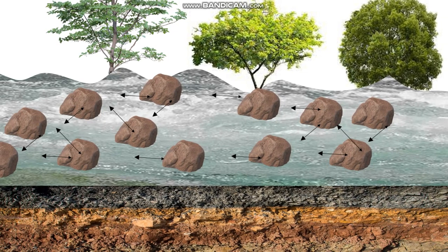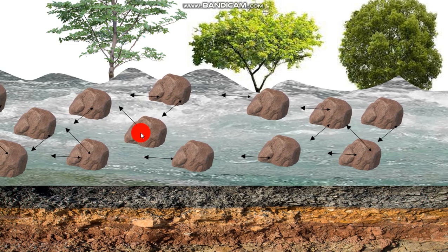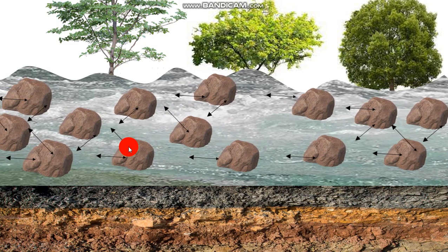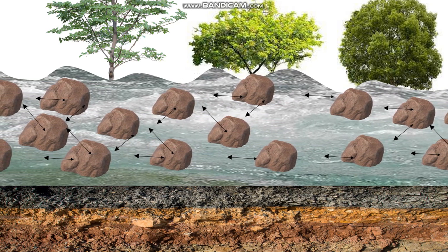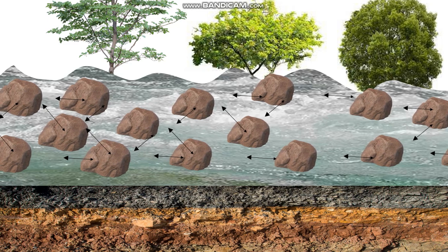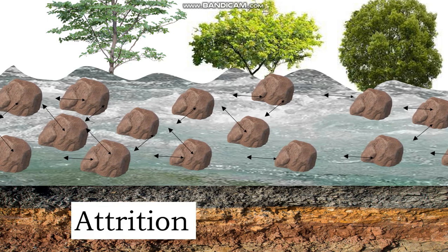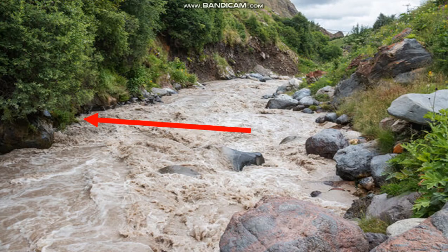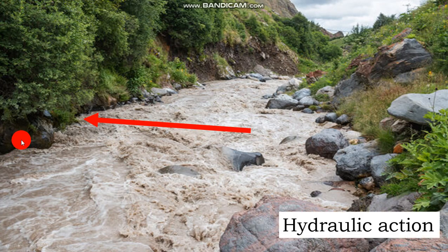The third process is attrition, which is caused by constant collision between the load being carried by the river. The load is in constant collision against each other and against the river bank and the bed of the river. This load is reduced in size, and the process is called attrition. This explains why at the old stage of a river, the load would be deposited and there will be smooth rock pebbles.